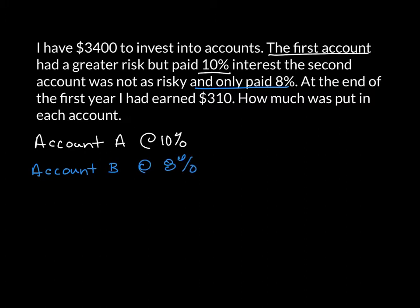Now, what I know is I invested a total of $3,400. So I need a statement for those pieces. What that tells me is the amount that I put in account A plus account B is equal to $3,400.